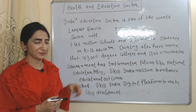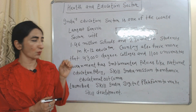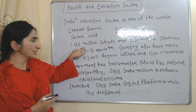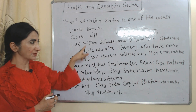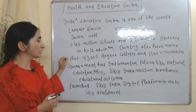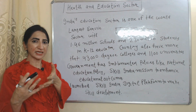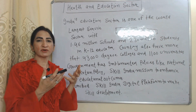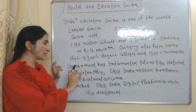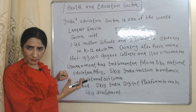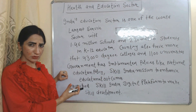India's education sector is one of the world's largest, with 1.46 million schools and 230 million students in K-12 education. The country also has more than 43,000 degree colleges and 1,100 universities. The education sector in India is continuously growing, and the government is making many policies to improve the quality of education.